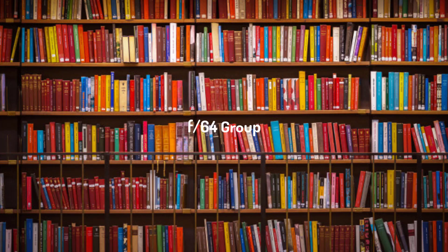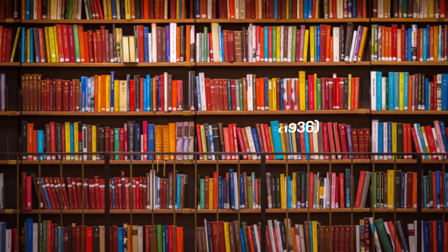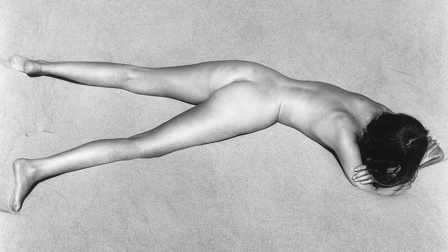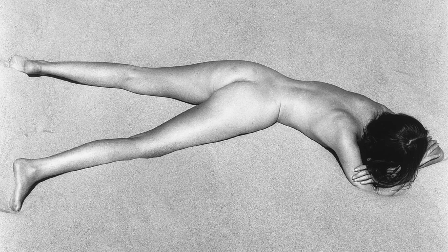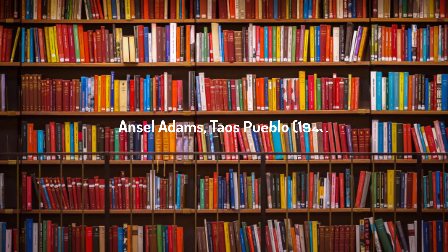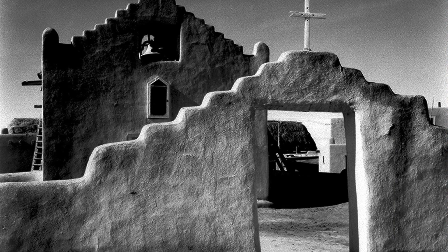The F64 group treated photography as not an interpretation, and tried to reveal the world as it is. First, we have Edward Weston's Nude from 1936. Weston attempts to show the human body in its natural state, with a relatively unobtrusive background of sand. Second, we have Ansel Adams's Taos Pueblo from 1941. Adams captures a sense of the rough-hewn nature of the buildings in this scene.